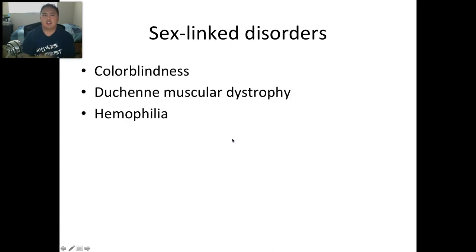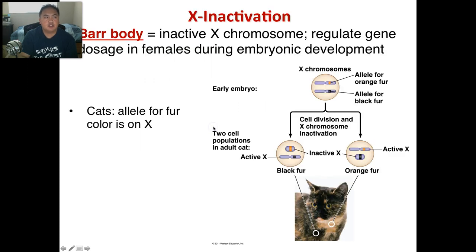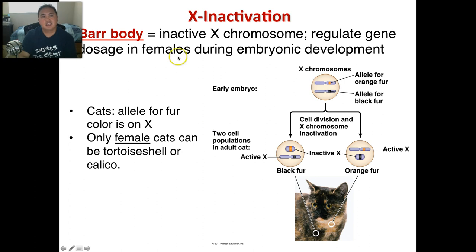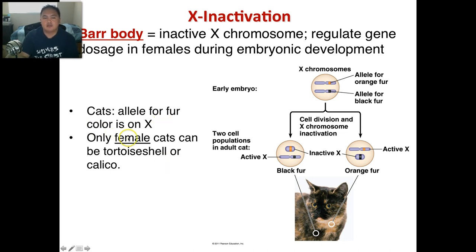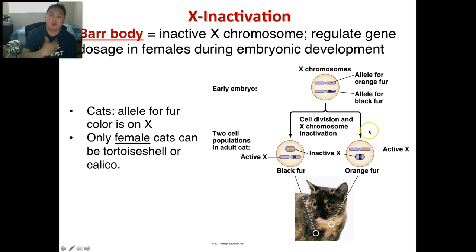Sex-linked disorders include colorblindness — males are more likely to be colorblind than females — muscular dystrophy, and hemophilia. A Barr body is an inactive X chromosome. It regulates gene dosage in females during embryonic development. For cats, the allele for fur color is on the X chromosome. Only female cats can be tortoiseshell because they need a double X — one allele for orange and one for black. During cell division, one X becomes inactive, and the active X determines if the fur is orange or black.